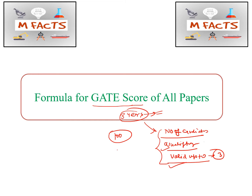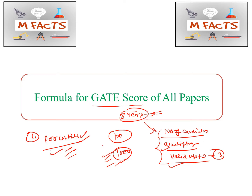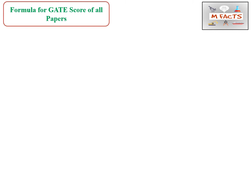They also mention the GATE score out of 1000. So we will see how to calculate the GATE score out of 1000, and we will also see how to calculate the percentile, since in some exams they ask how much percentile you scored in your GATE exam.